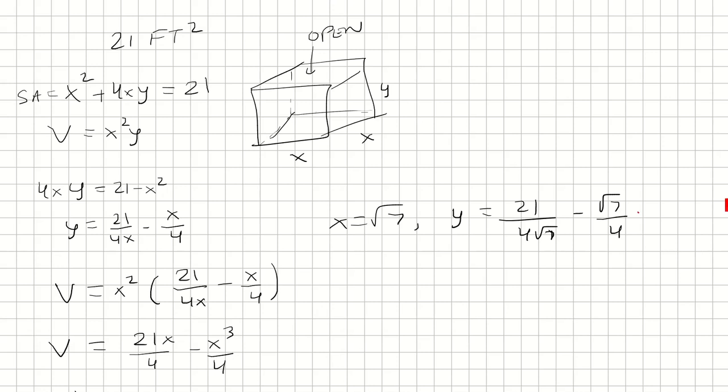And so that's 21 over 4 root of 7, minus 7 over 4 root of 7, which is 14 over 4 root of 7, which is 7 over 2 root of 7. And that's going to be square root of 7 over 2.